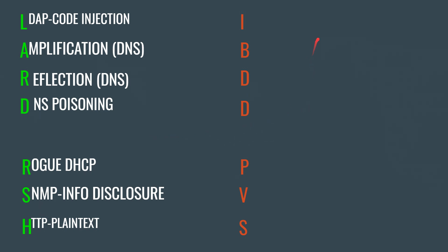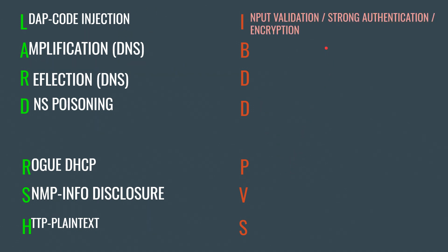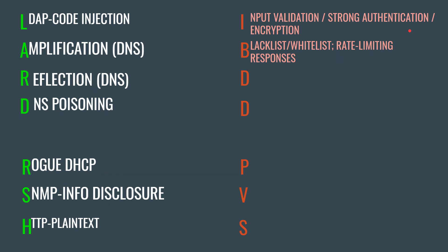For S (SNMP), the threat is information disclosure, and for H (HTTP), the threat is being in plain text. On the countermeasures side, for code injection (LDAP) we have input validation, strong authentication, and encryption.